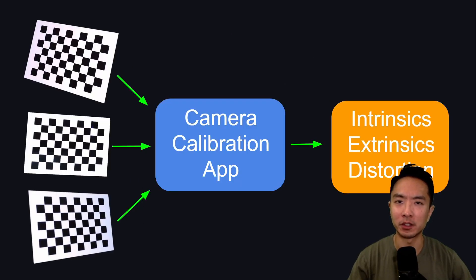Before you can project anything onto your scene, you need to first calibrate your camera. If you're new to camera calibration, I have some videos all about it, so you could check it out on my channel. The general idea is that you take some chessboard images, you feed it into your camera calibration app, and you get what's called your intrinsics, extrinsics, and your distortion parameters.